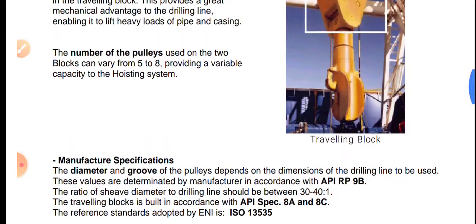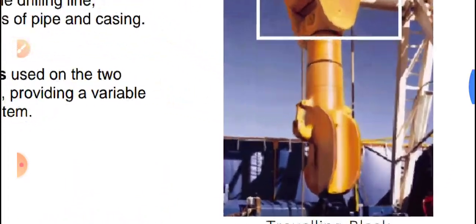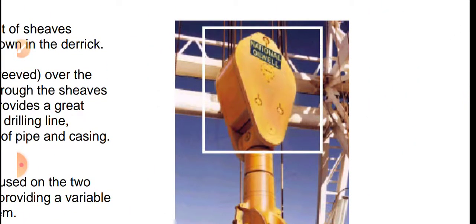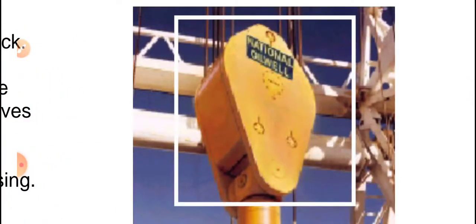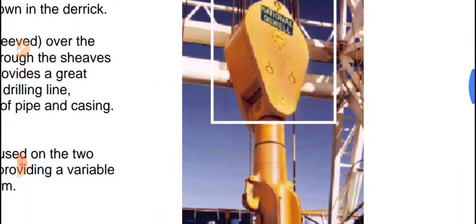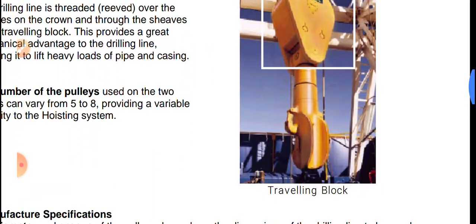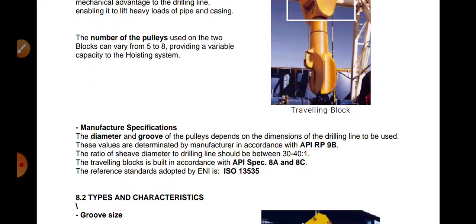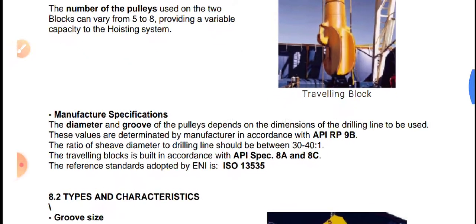Here you can see the traveling block. At the bottom of the block there is a hook, which is used to lift the load. The entire load is shared by however many sheaves are present in the traveling block — they work together to lift the entire load.